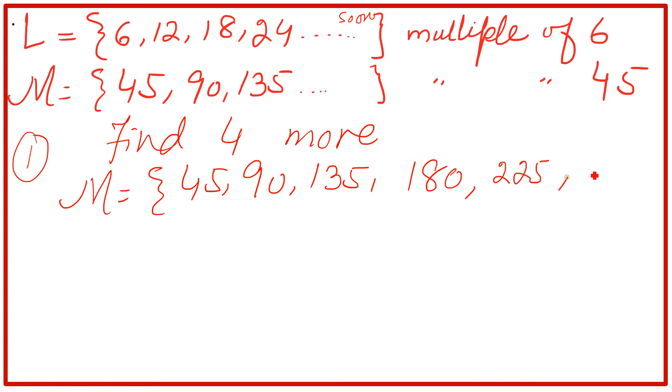And then 225, then add 45 more it will be 270, and when we add 45 more it will be 315. So simple. Find four more. If I say five, add five more. So add 45 to 315 and so on. But here it says four more elements of M, so three are given, four more we did.